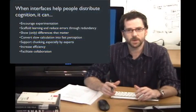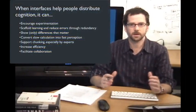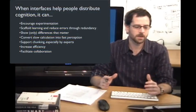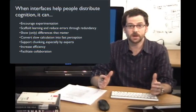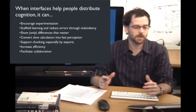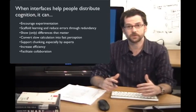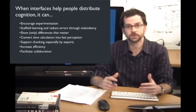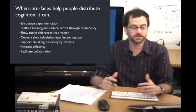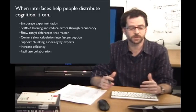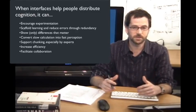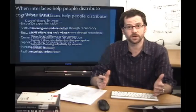When interfaces help people distribute cognition, it can encourage experimentation, scaffold learning and reduce errors through redundancy, show only the differences that matter, convert slow calculation into fast perception, support chunking especially by experts, increase efficiency of interactions, and facilitate collaboration. Let's go through these one at a time.